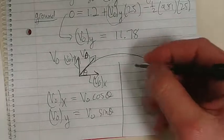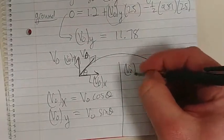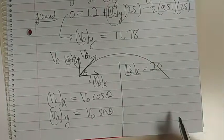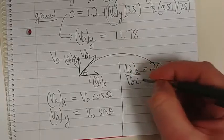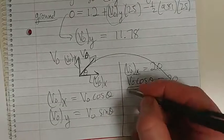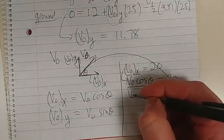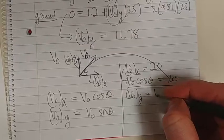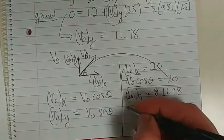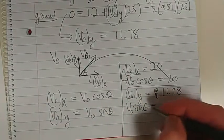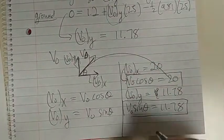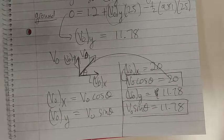So let's reproduce that original. V0X is 20. So what is V0X? V0X is actually V0 cos theta equal to 20. And V0, so that becomes that. Then V0Y is 11.78, but V0Y is V0 sin theta, 11.78. So there are my two new equations that I need to work with.